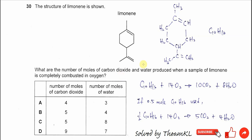Question 30. What are the number of moles of CO2 and H2O produced when a sample of limonene is completely combusted in oxygen? In order to get the moles of CO2 and H2O correctly, it's better to know the numbers of carbons and hydrogens in this molecule.